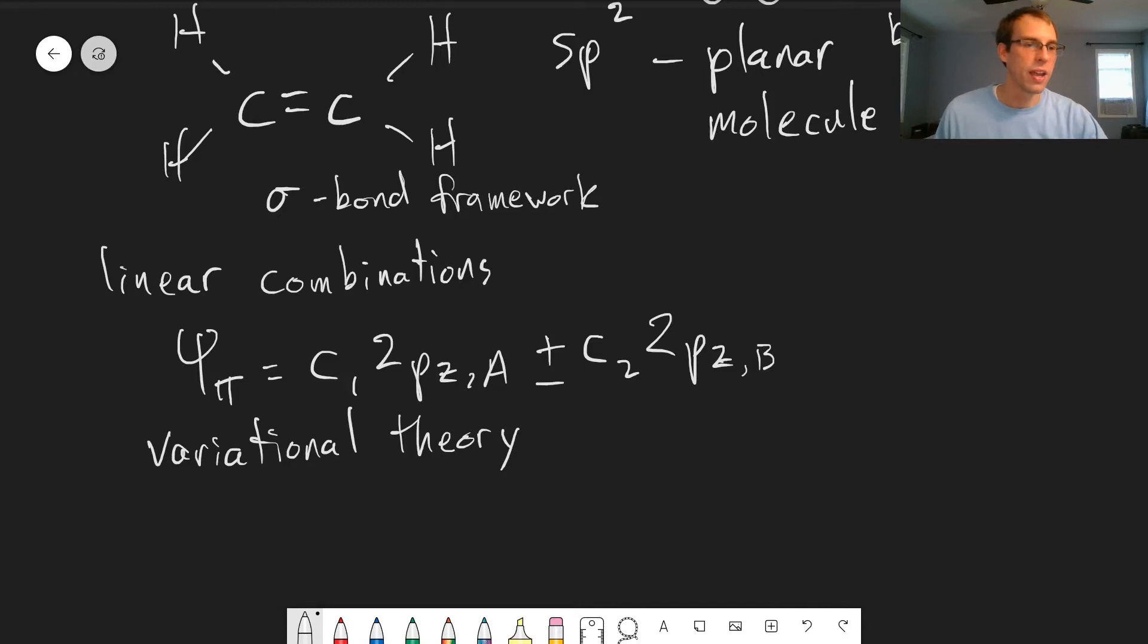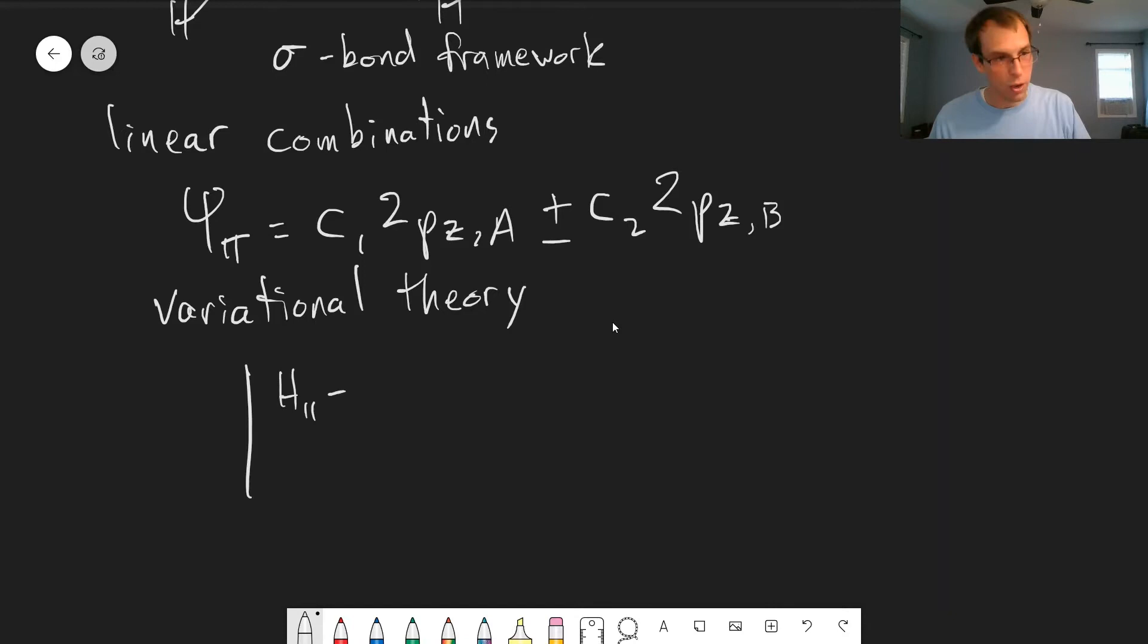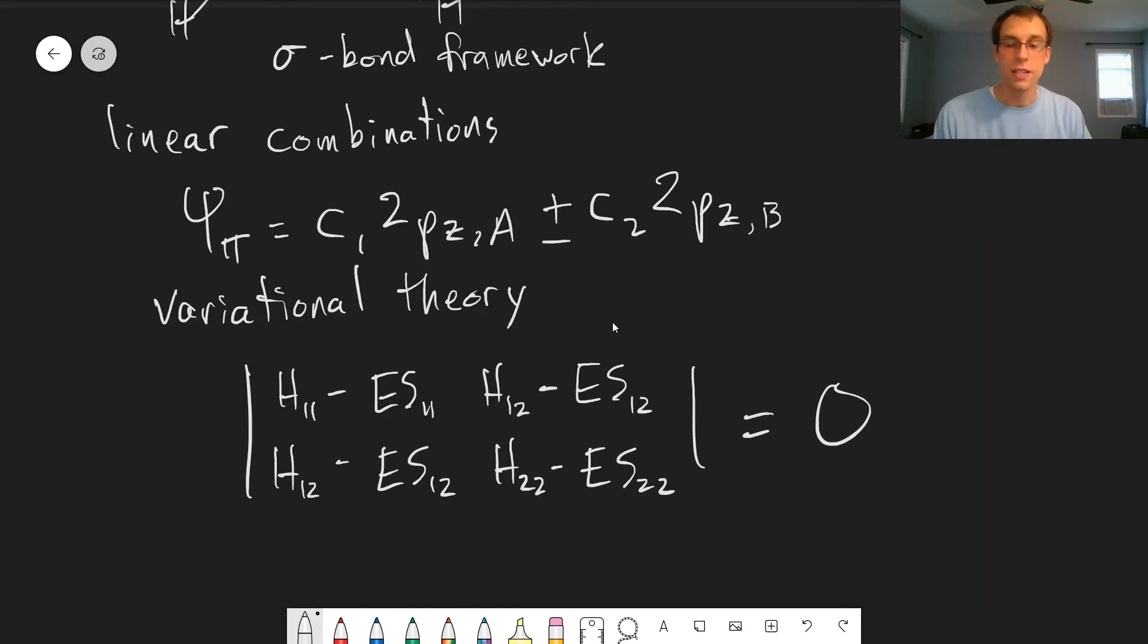This is a problem that we've already looked at specifically. So just to refresh you on what the secular determinant looks like, we have h11 minus e s11, h12 minus e s12. And these h's and s's represent integrals. So h involves the integral with the Hamiltonian operator in the middle of it, basically an expectation value using function 1 and function 1, or function 1 and function 2, and the s is without the Hamiltonian. And this determinant equal to 0 allows us to solve for e, and also allows us to determine the c coefficients.